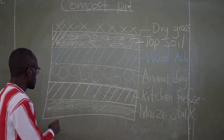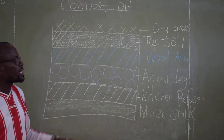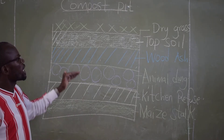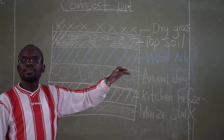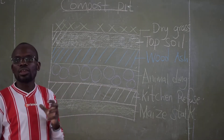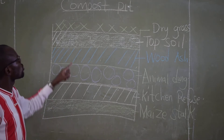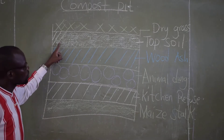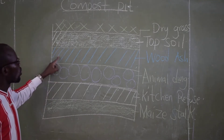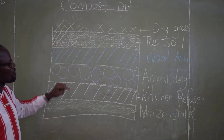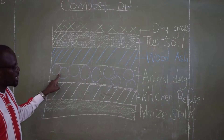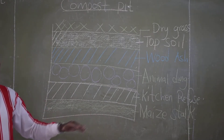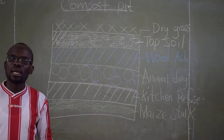So we have learned the different layers in a compost manure. As you can count: the first layer is dry grass, the second is top soil, the third is wood ash, the fourth is animal dung, the fifth is kitchen refuse, and finally the maize stalk at the base. You have to know the function of each and every material.